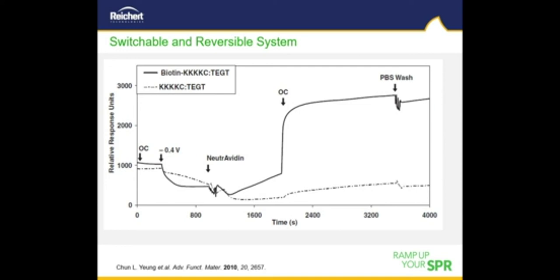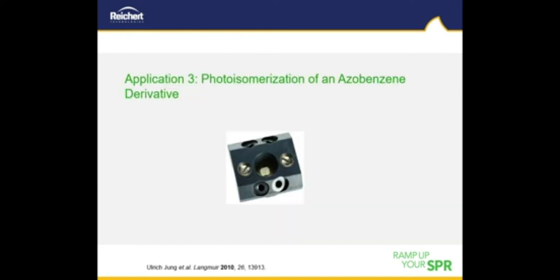The ability to regulate biomolecular interactions on surfaces driven by an external stimulus is of great theoretical interest and has practical impact in the biomedical and biotechnology fields. I will now show an example of how the Reichert two-channel system can be combined with photochemistry using Reichert's exclusive optical quartz window flow cell to observe the photoisomerization of an azobenzene derivative.